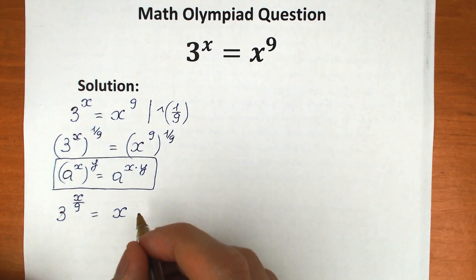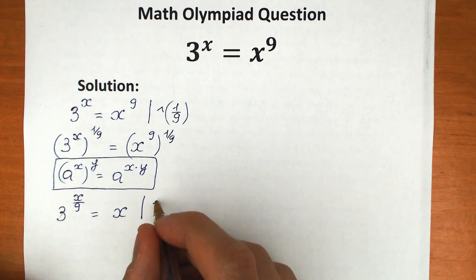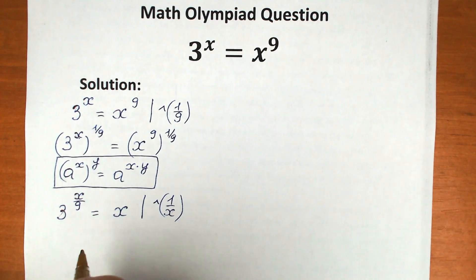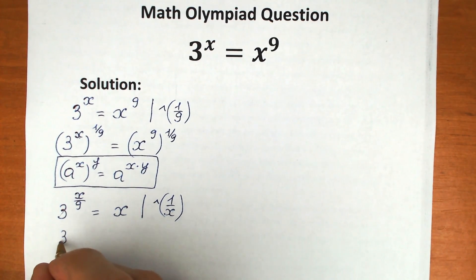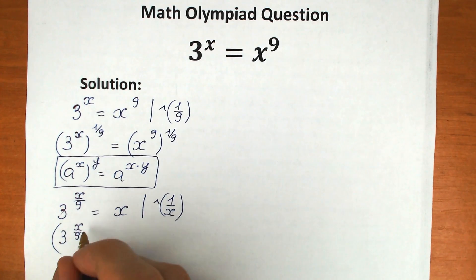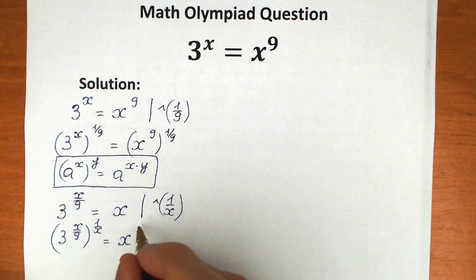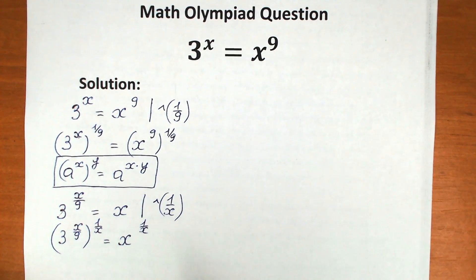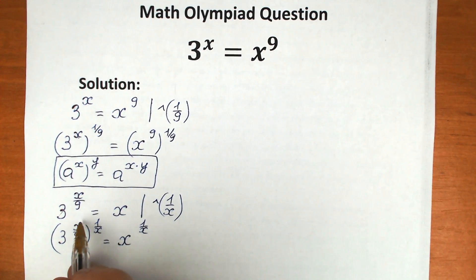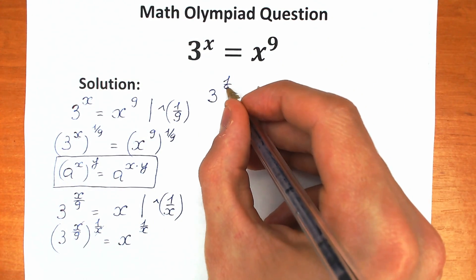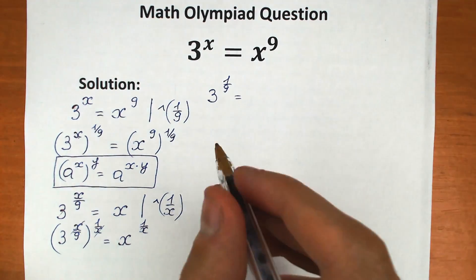Now let's raise both sides to the power 1 over x. On the left hand side we have 3 to the power x over 9, raised to the power 1 over x. Take a look closely: x over 9 times 1 over x — we can cancel x — so we have only 3 to the power 1 over 9, equal to x to the power 1 over x.